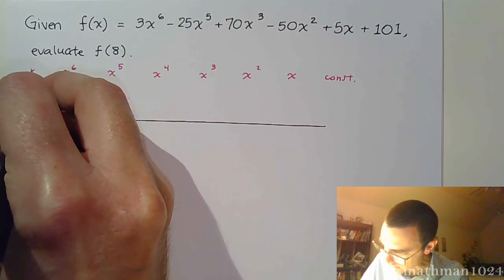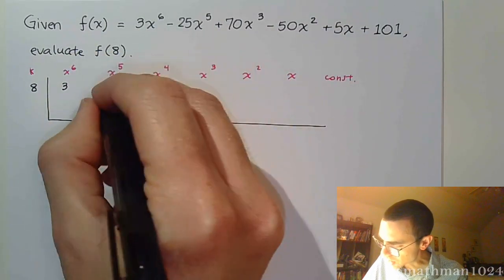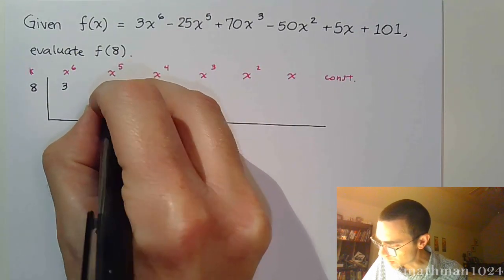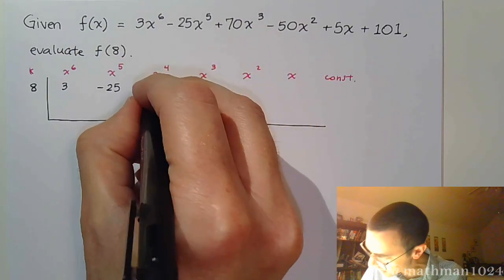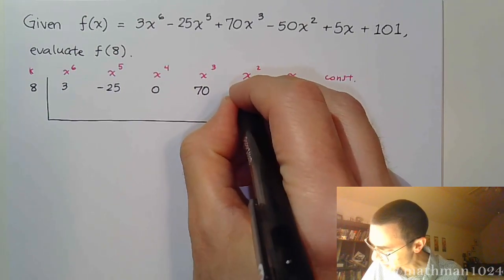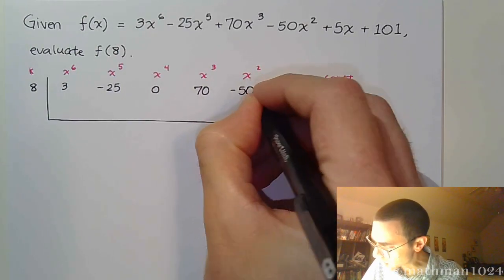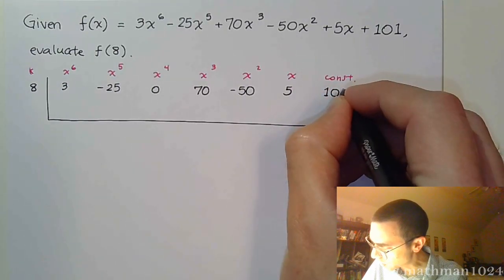So, my k value is exactly what you see, and that's 8. I've got 3x^6 - 25x^5. Then it jumps to 70x^3, so that means I have 0x^4, positive 70x^3, minus 50x^2, plus 5x, and plus 101.